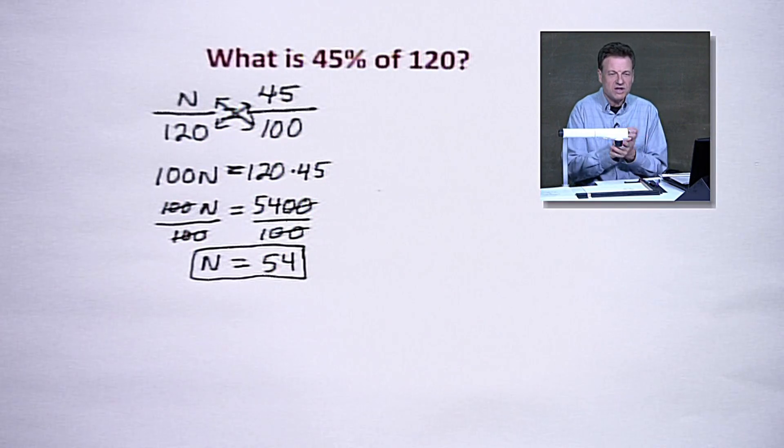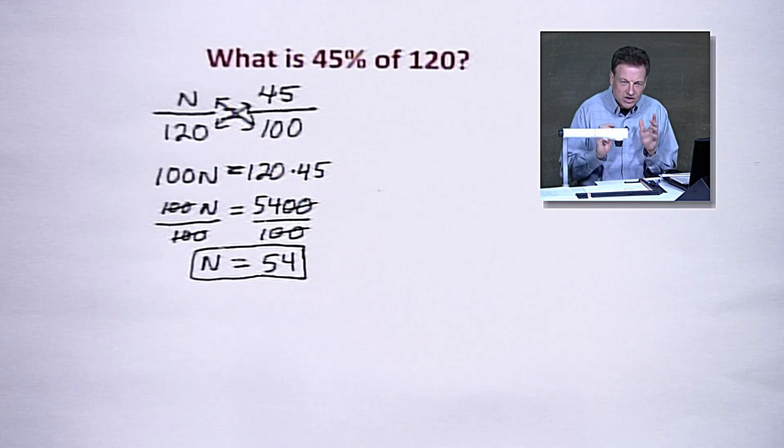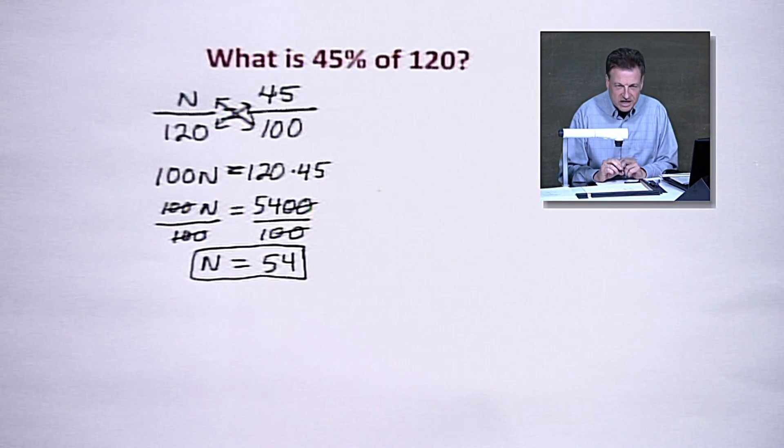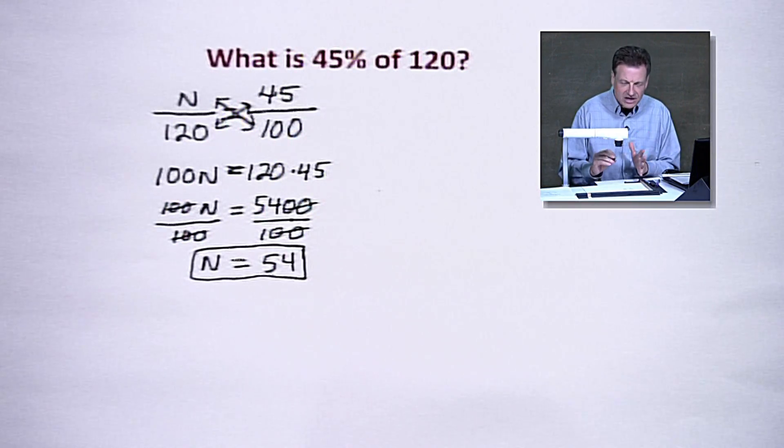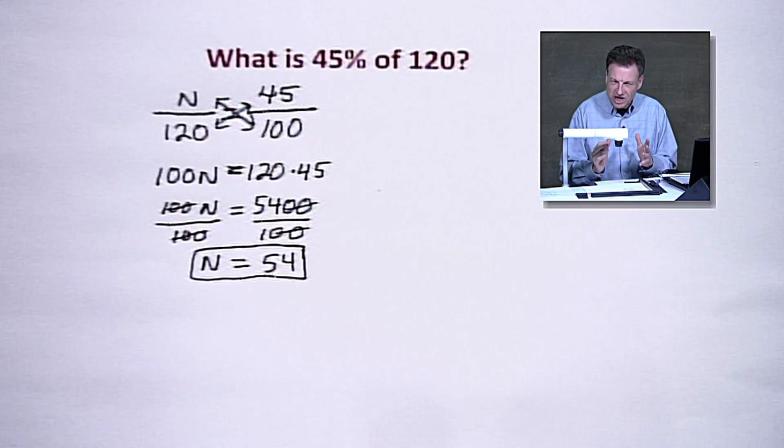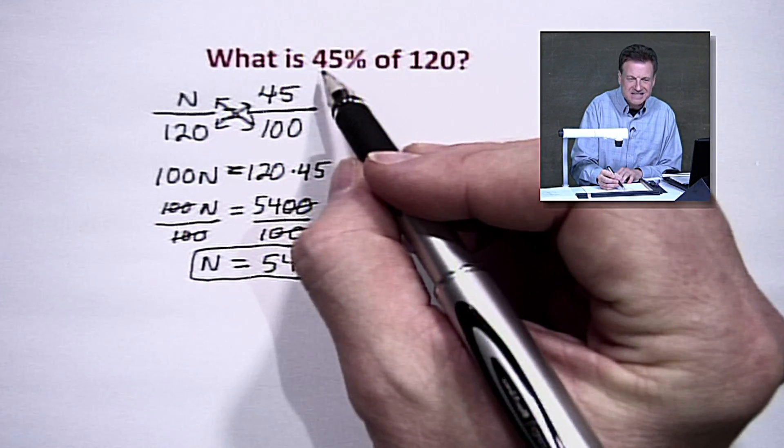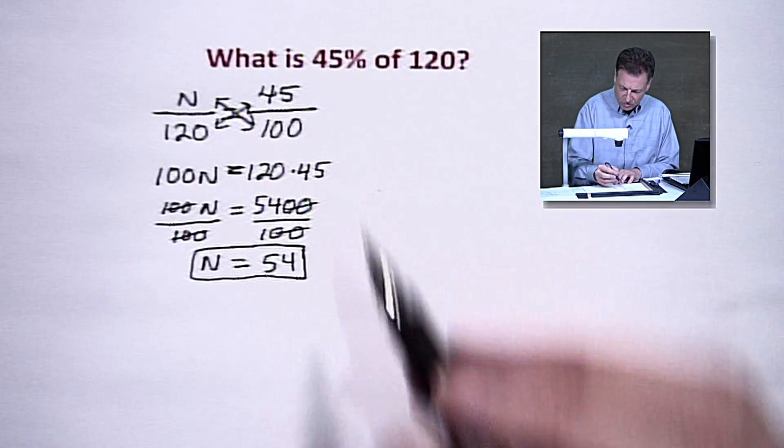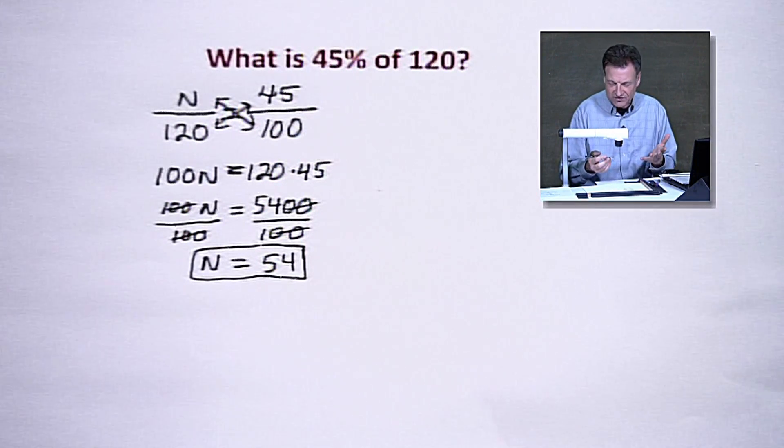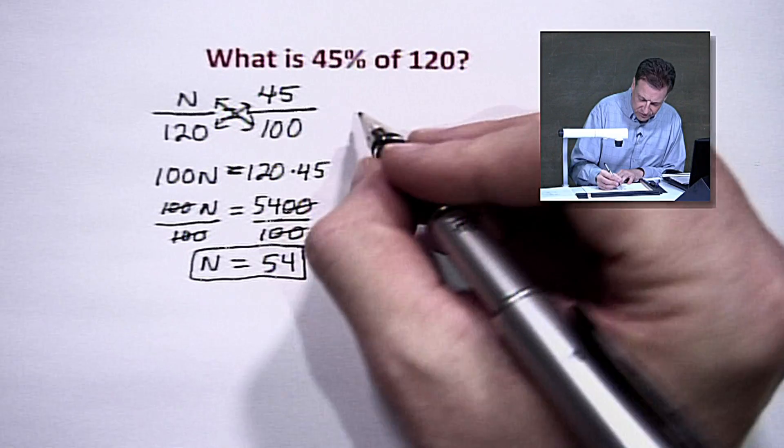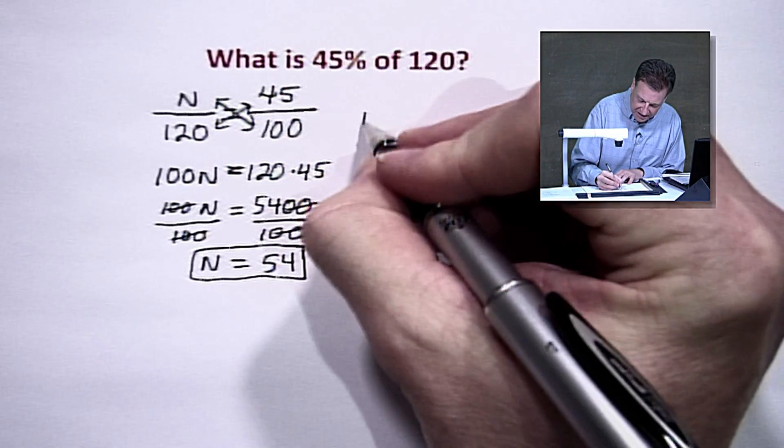Now, I said that's one option. That's the proportion approach. There's another way that you can do this. Some of you say, well, Ernie, I always just change to a decimal and multiply. And let's ask ourselves, why can we just change it to a decimal? Because 45% as a decimal is 45 hundredths, which is the same thing as 45 divided by 100, or 45 over 100 we like to see in a fraction.